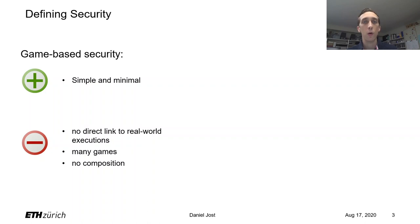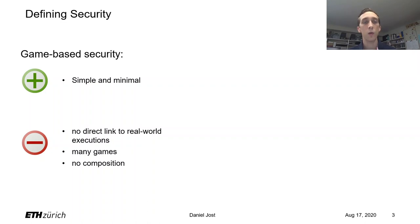There are essentially two approaches to defining security. The first one, game-based security, leads to very simple and minimal security definitions. The downside however is that those security definitions don't always immediately link to a real-world execution of the protocol. Moreover, if we were to build a cryptographic protocol from many building blocks, then at each step we will have to prove an explicit reduction to the security game of the underlying primitive.